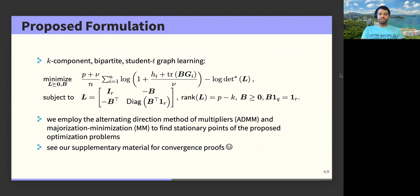Now to obtain a stationary point of this optimization program, we leverage two optimization frameworks, the alternating direction method of multipliers and the majorization minimization. We present convergence proofs as well as experimental convergence results in our supplementary material.